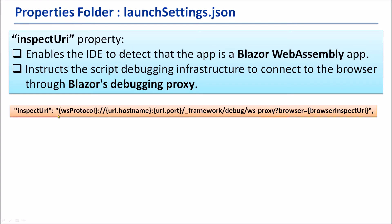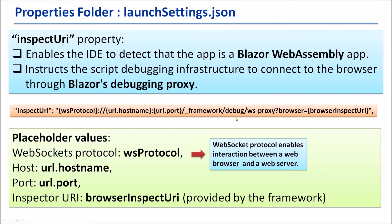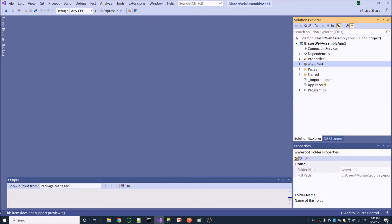We have some placeholders inside this element: WS protocol, URL hostname, URL port, and browser inspect URI. The first one, WS protocol, is WebSocket protocol — WebSocket protocol enables interaction between a web browser and a web server. The second is URL host, the third is URL port, as we saw inside the settings, and the last is browser inspect URI, which is provided by the framework — for example, the Blazor framework.